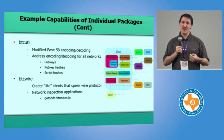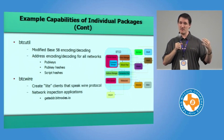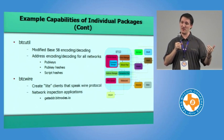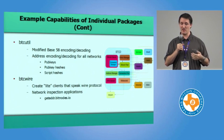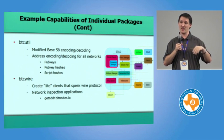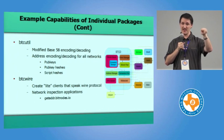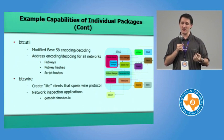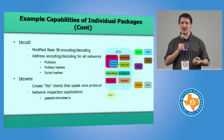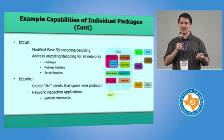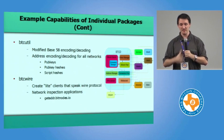Finally, there's the BTC Wire package — it implements the entire wire protocol. Whenever two nodes or peers on the network want to communicate, they use the Bitcoin protocol, and this package implements that. By making it a separate package, you can build lightweight analytics tools. For example, the getaddr.bitnodes.io project shows all currently active reachable nodes geographically and what clients they're running. With the BTC Wire package, you can create a quick light client that connects to a Bitcoin node, sends the version message, and grabs addresses. Very easy to work with.